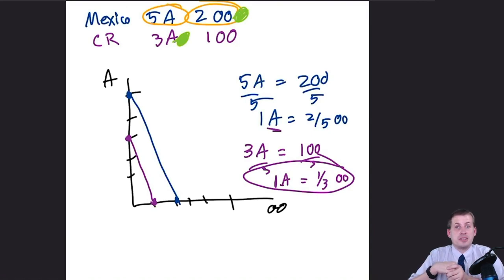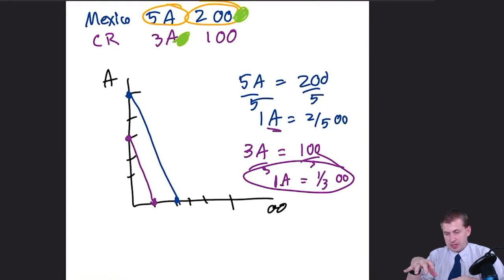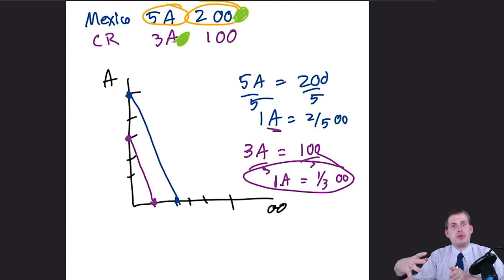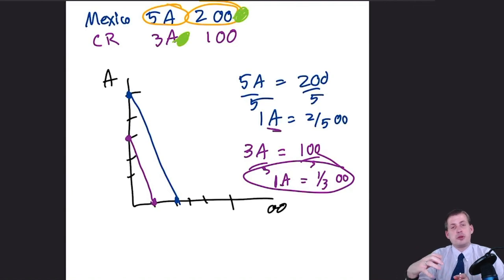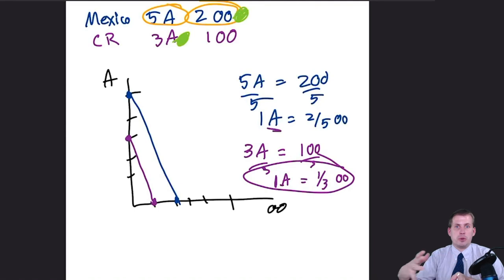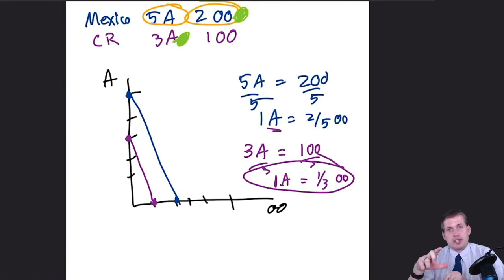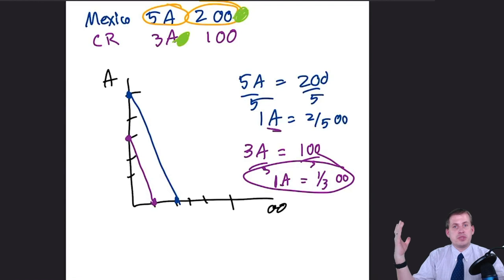Lots of jobs left the United States for other countries because the opportunity cost of making furniture was lower in China — they didn't have to give up as much as we did to produce furniture in places like Asheville or Charlotte. The furniture industry evaporated in the 1990s based entirely on this idea of comparative advantage. We see this today with iPhone parts manufactured all over the world — China, Korea, Germany, the US — with Apple choosing countries based on their comparative advantage in specific components.